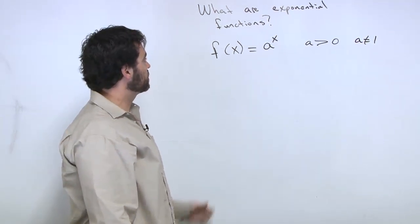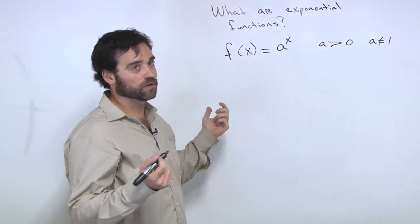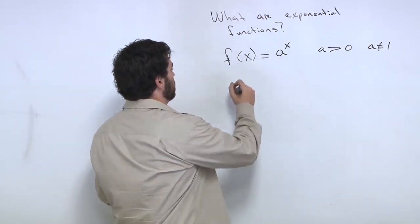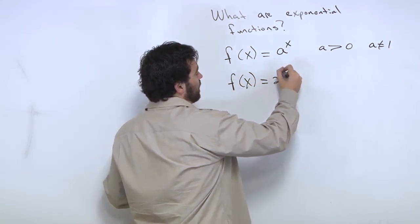All right, that is the form. There's our exponential functions, and let's look at the first one everybody always studies, f of x is equal to 2 to the x.